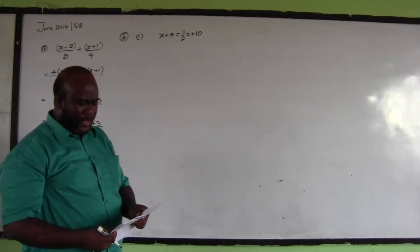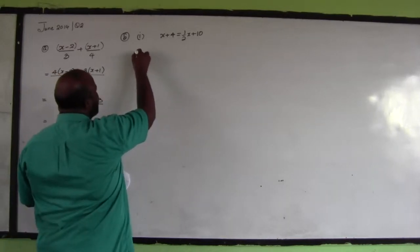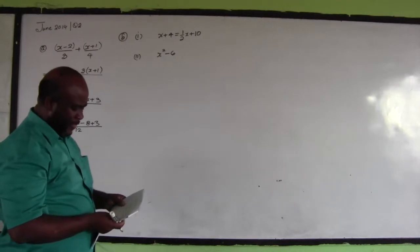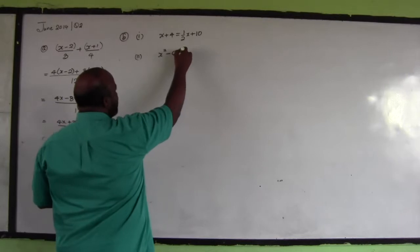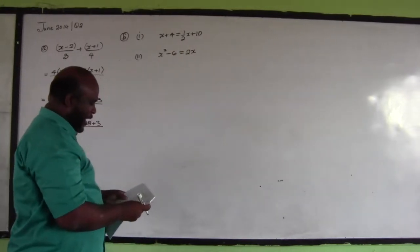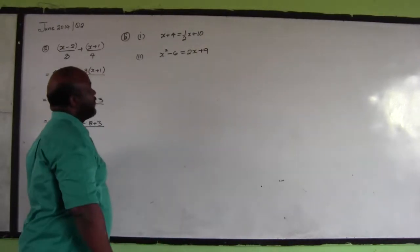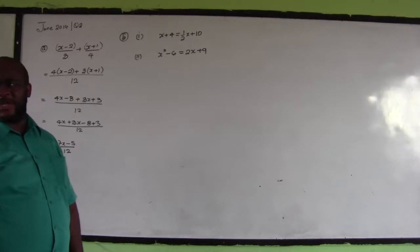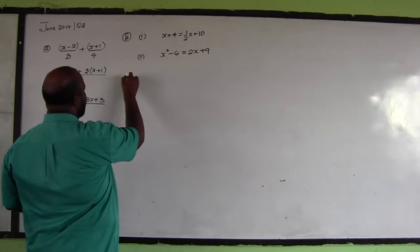Statement ii: Squaring a number and then subtracting 6 gives the same result as doubling the number and adding 9. So that is: x squared minus 6 is equal to 2x plus 9.